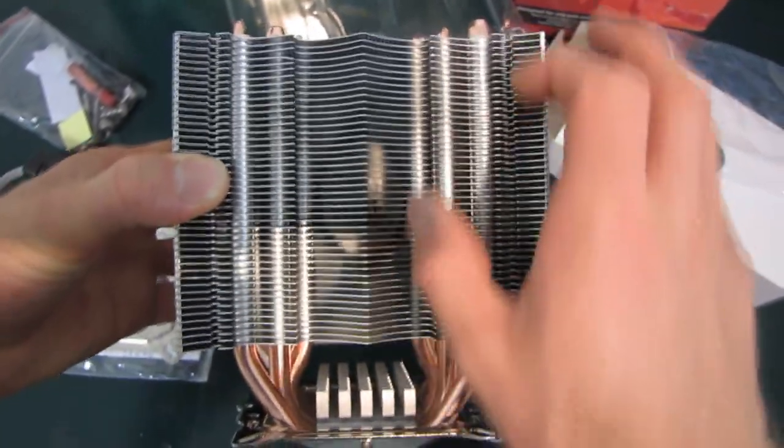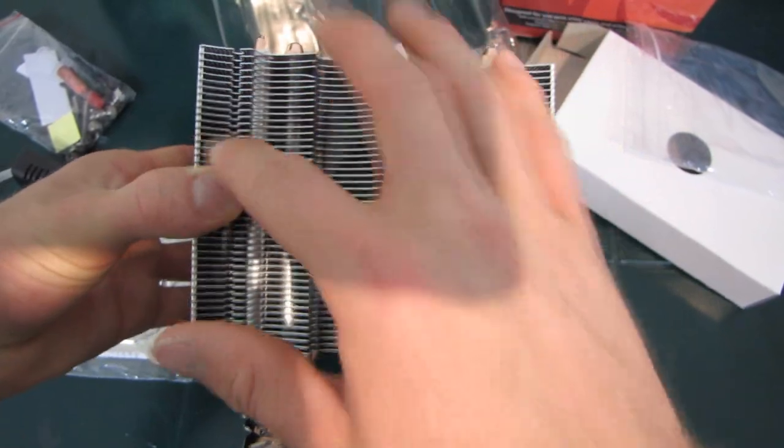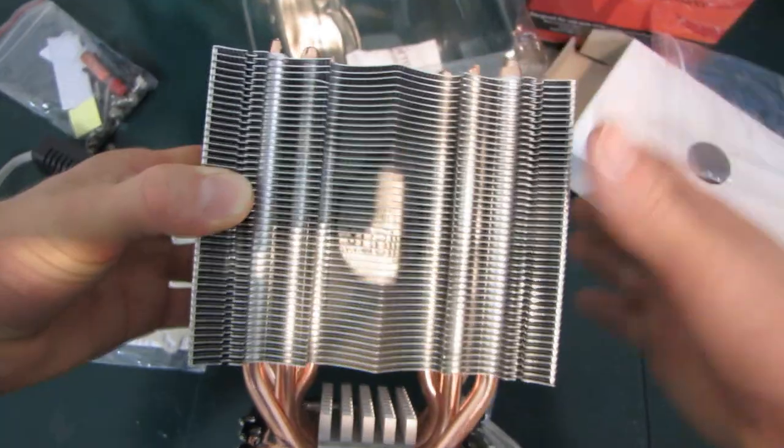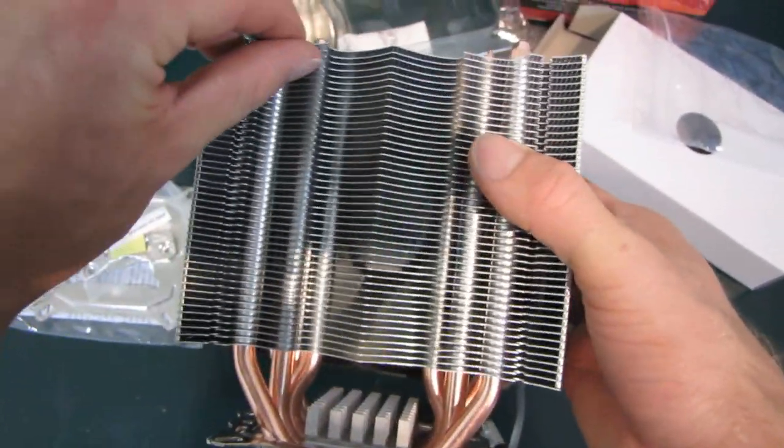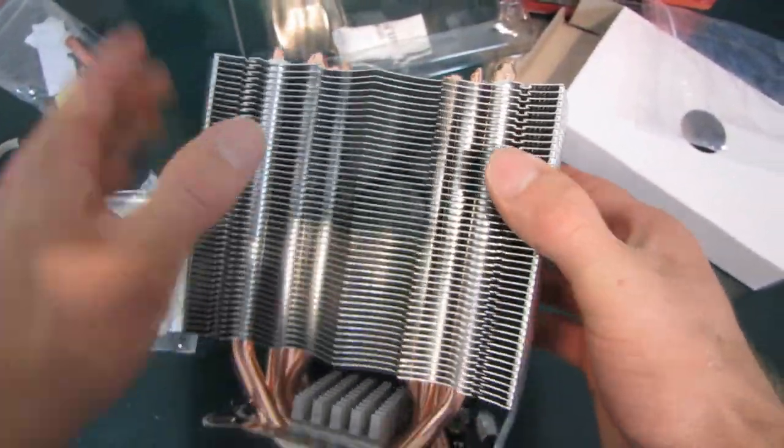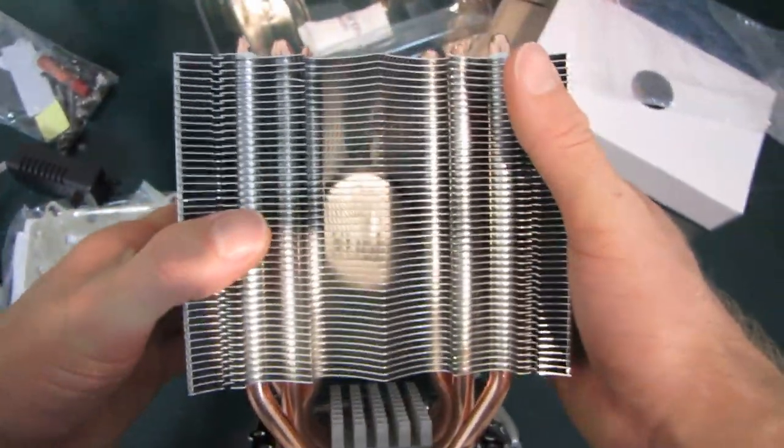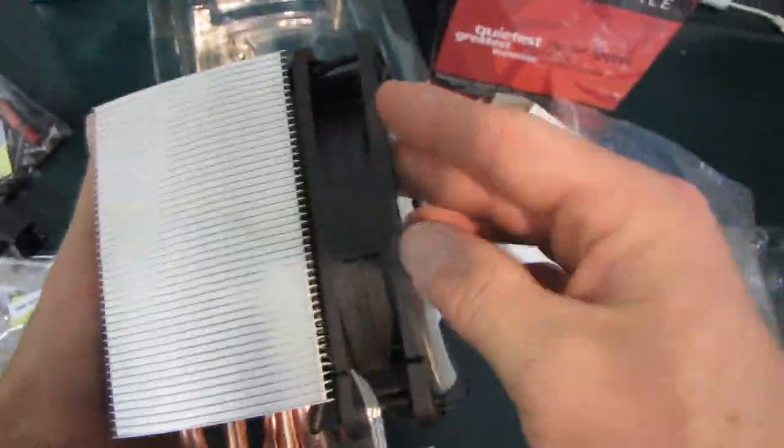The blades of the fan actually blow air through an area kind of this shape. So they've positioned most of the heat pipe cooling where it's actually going to take advantage of the blades of the fan.